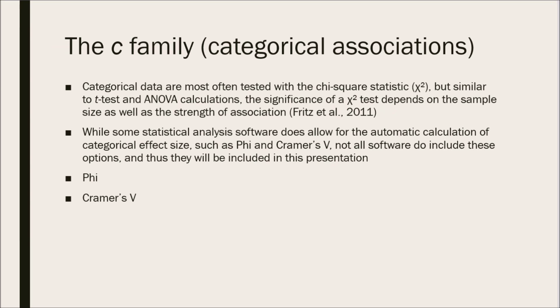Categorical data are most often tested with the chi-square statistic, denoted as chi-squared, but similar to the t-test and ANOVA calculations, the significance of a chi-square test depends on the sample size as well as the strength of the association.